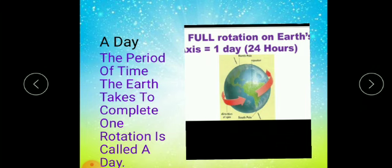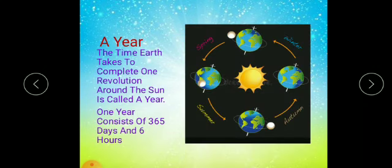The period of time the earth takes to complete one rotation is said to be a day. When earth rotates around its own axis, that time period is said to be a day. Earth takes one day — that is 24 hours — to complete one rotation around its own axis.